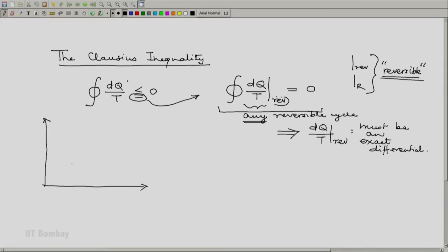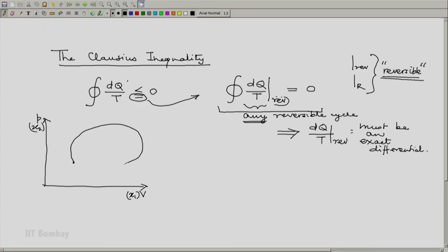Consider a cyclic process, you can select either p and v or x1 and x2 as the coordinates to depict it. Consider a reversible cycle. Since it is reversible, it is definitely quasi-static. And let 1 and 2 be two distinct states on this cycle.